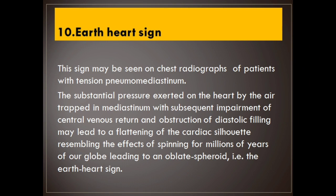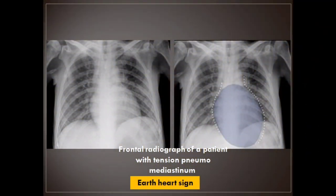Number 10: Earth heart sign. This sign may be seen on chest radiographs of patients with tension pneumomediastinum. The substantial pressure exerted on the heart by air trapped in the mediastinum, with subsequent impairment of central venous return and obstruction of diastolic filling, may lead to a flattening of the cardiac silhouette resembling an oblate spheroid — i.e., the earth heart sign.